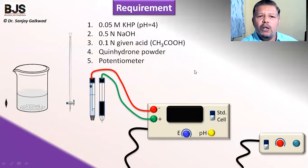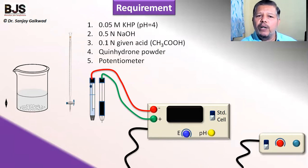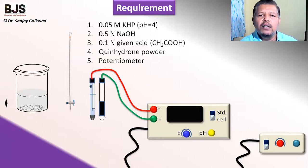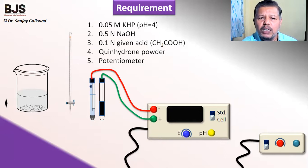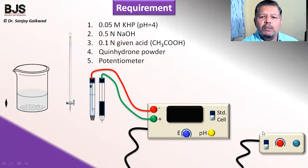For this experiment, we require the following solutions: 0.05 molar potassium hydrogen phthalate solution, 0.5 normal NaOH solution, 0.1 normal monobasic acid (acetic acid in this case), quinhydrone powder, and a potentiometer. The potentiometer contains two electrodes — a platinum electrode and a calomel electrode. A magnetic stirrer is also required to stir the quinhydrone powder into the beaker.